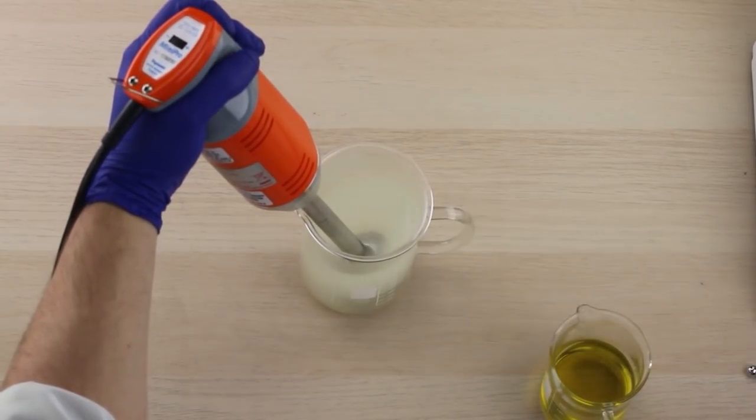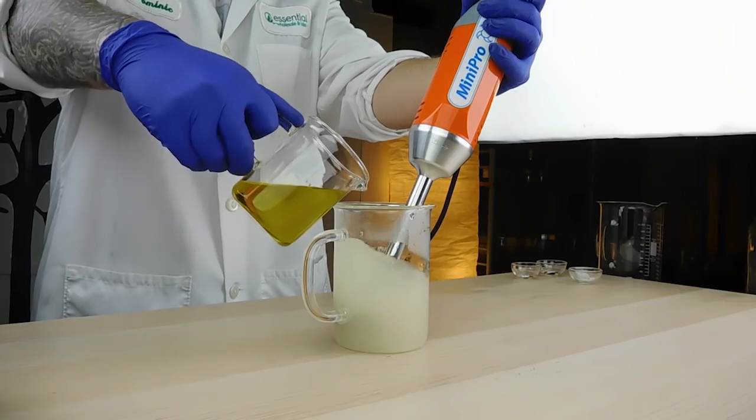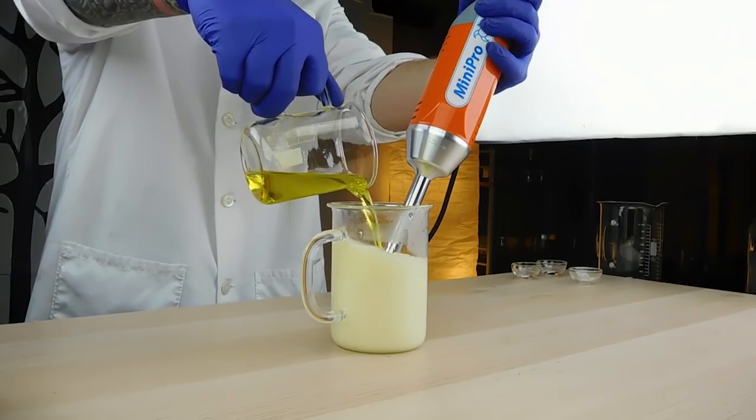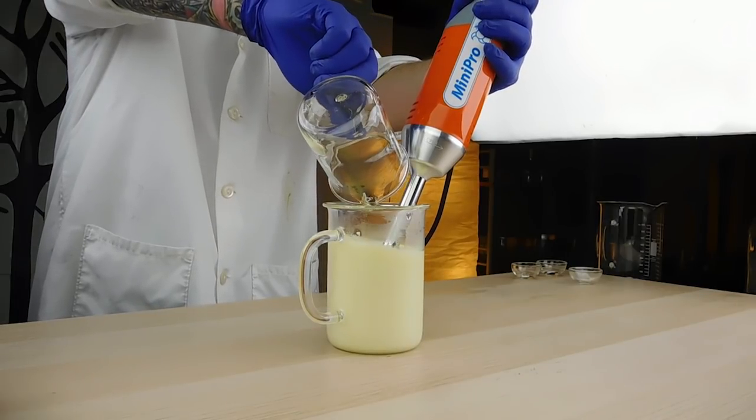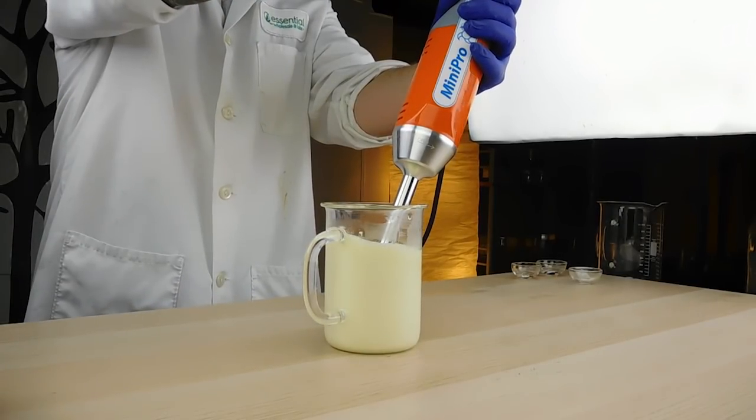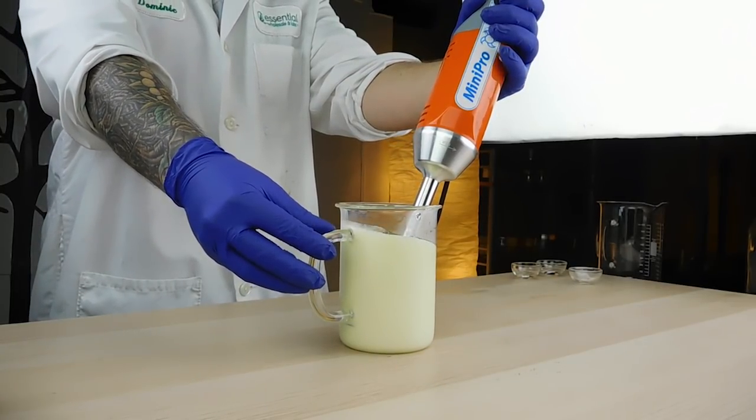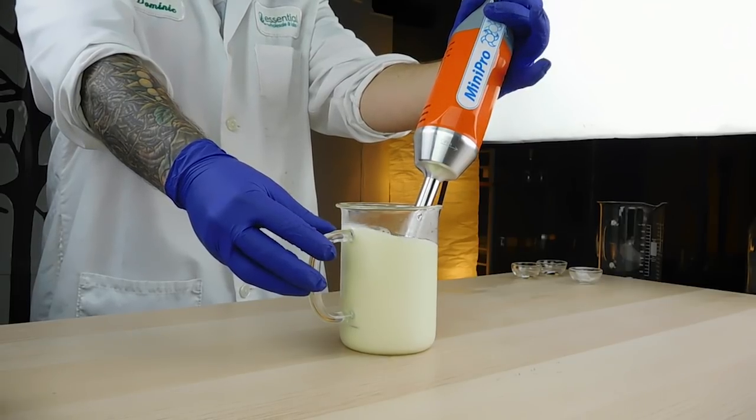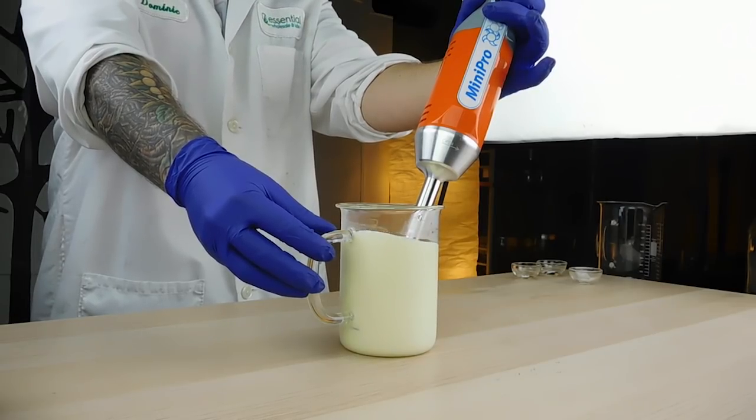And we're using xanthan gum as a stabilizer. Now slowly add in the hot oil phase. And then we will high shear it for a minute or two. You'll notice it getting whiter. That is the water phase and melt phase combining to form micelles.